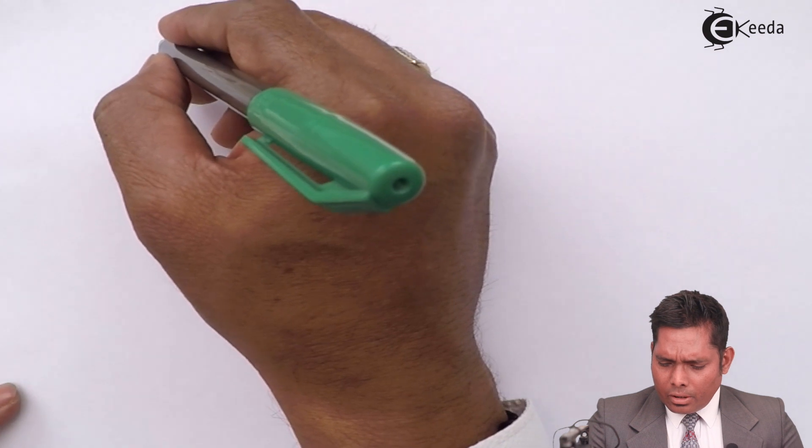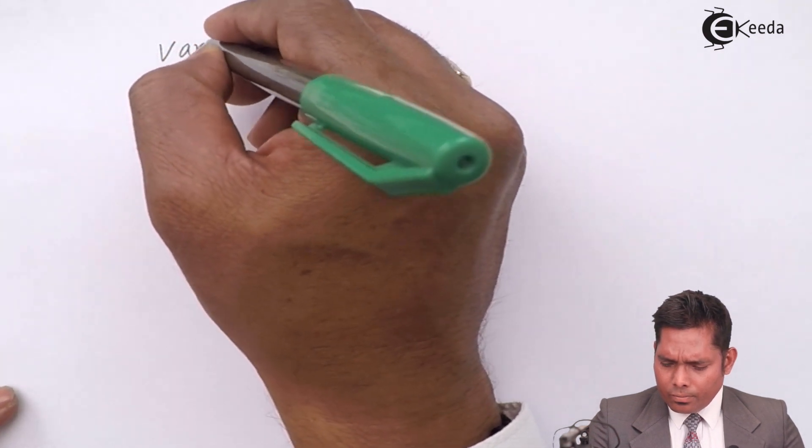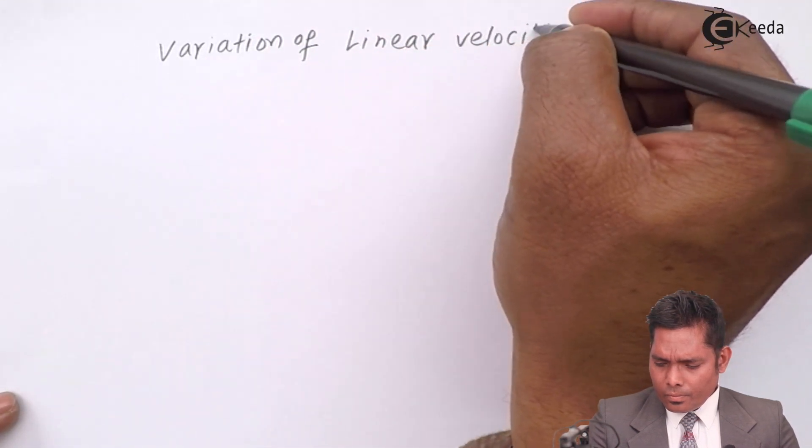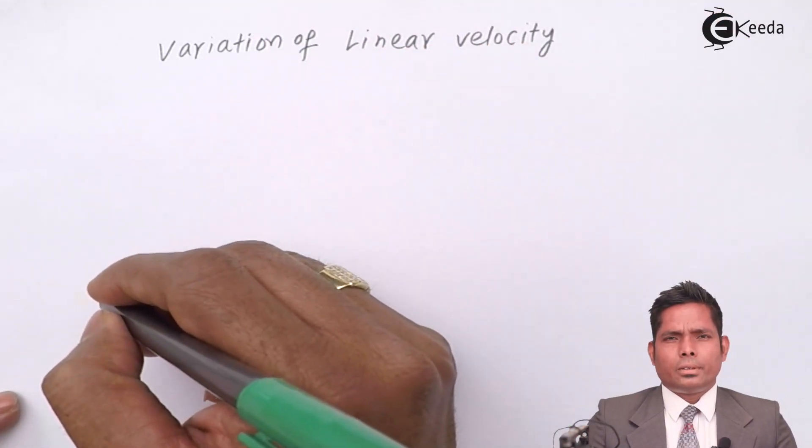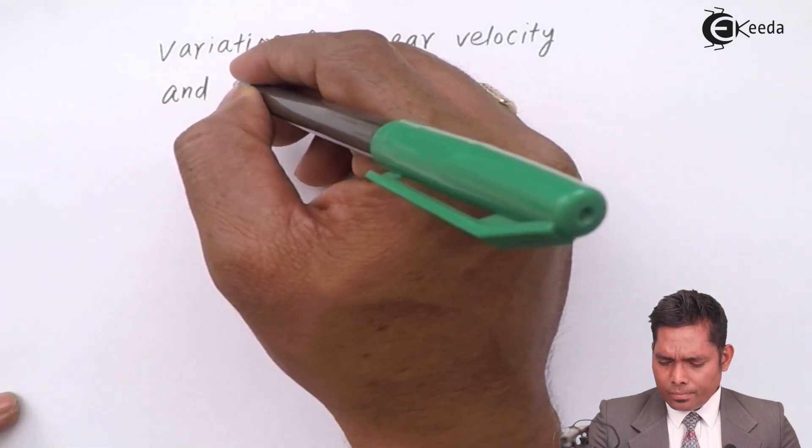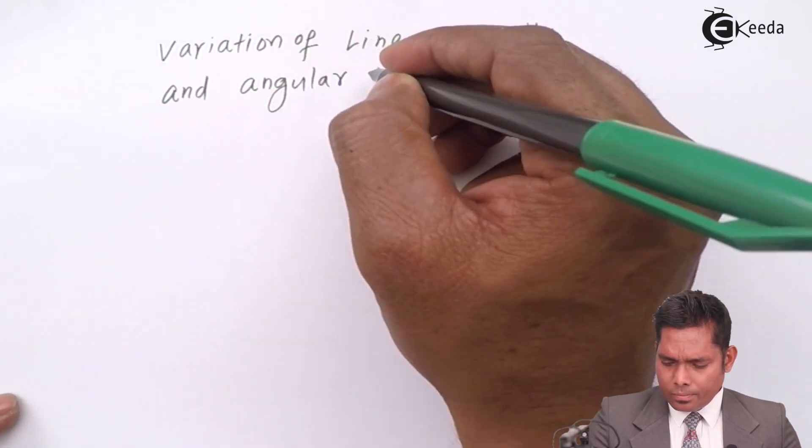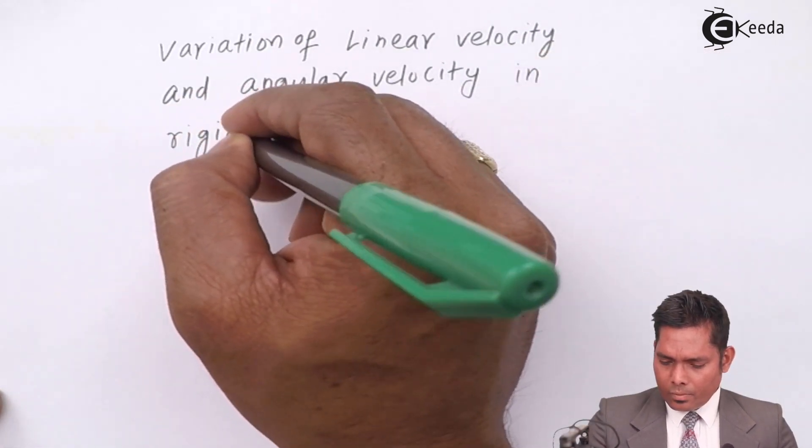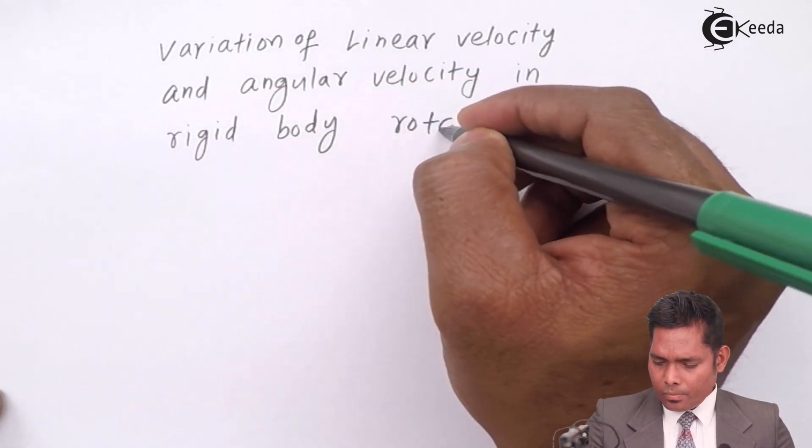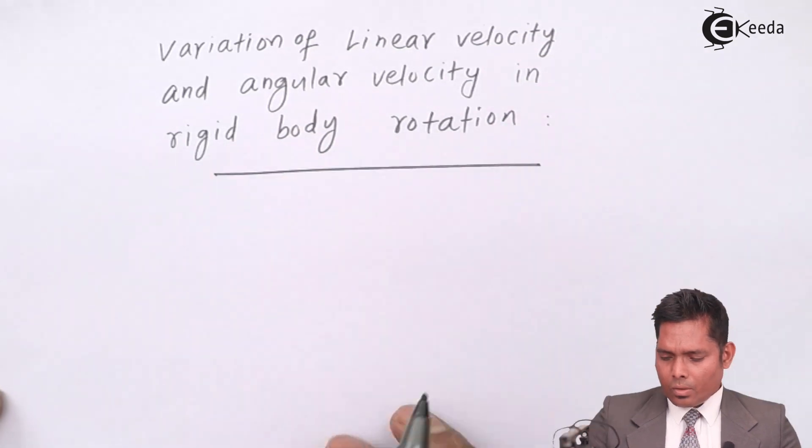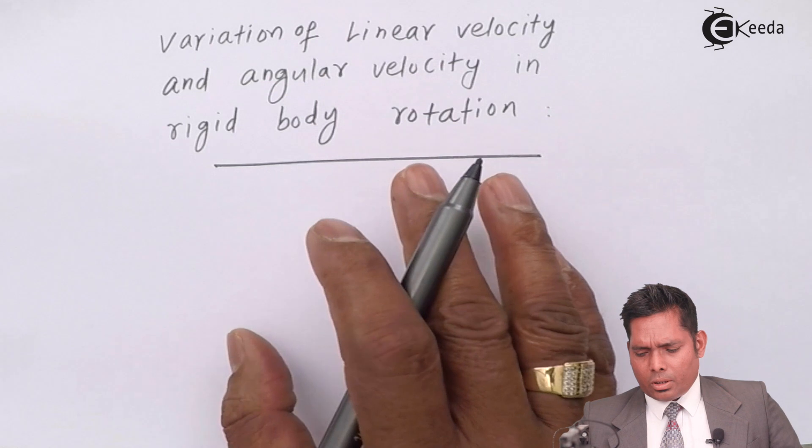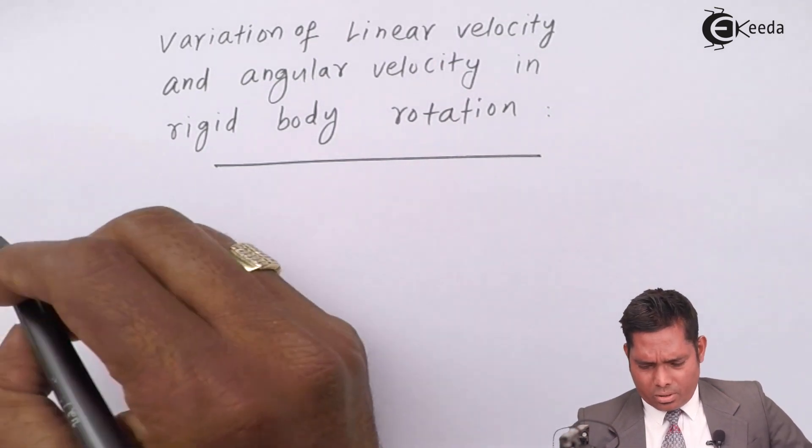Hello students, let us understand the variation of linear velocity and angular velocity. This is a very conceptual part to understand rotational motion.